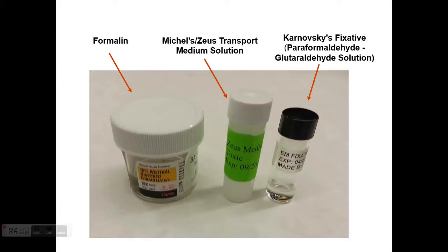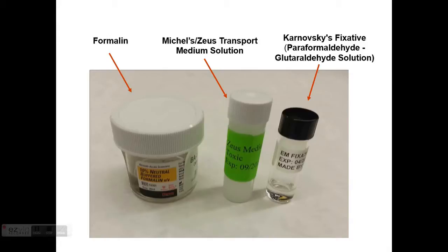For example, Michel's or Zeus transport medium is used for immunofluorescence studies. We don't actually fix tissue for immunofluorescence; it's snap frozen, then cut and stained. For electron microscopy, we use glutaraldehyde, which is a superb fixative but fixes tissue very slowly. This is why it's perfect for ultrastructural viewing of really small samples. It's not convenient for light microscopy, so we use formalin, which is a great fixative for light microscopy viewing.